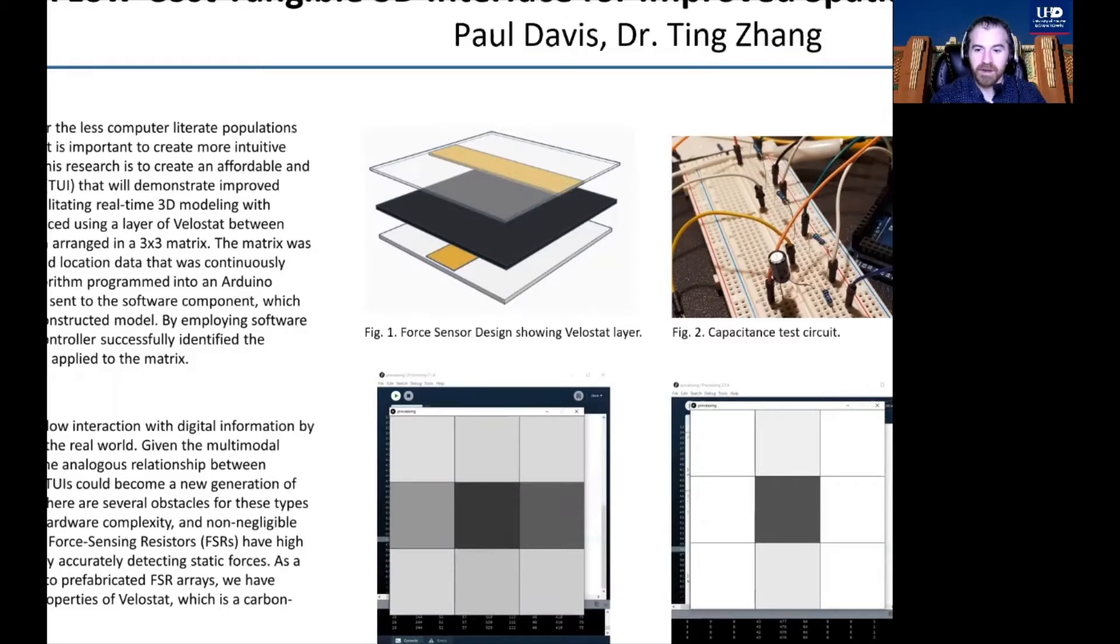Each row is wired into a voltage divider circuit using a 1000 ohm pull-down resistor. By applying voltage to one column at a time, we can determine the location and magnitude of forces applied to the array.